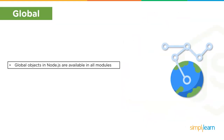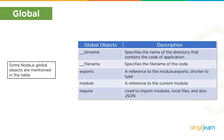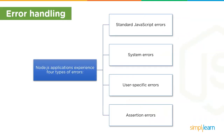The next component is global. Global objects in Node.js are available in all modules. These objects include functions, modules, strings, and more. Some Node.js global objects are __dirname, __filename, exports, module, and require.